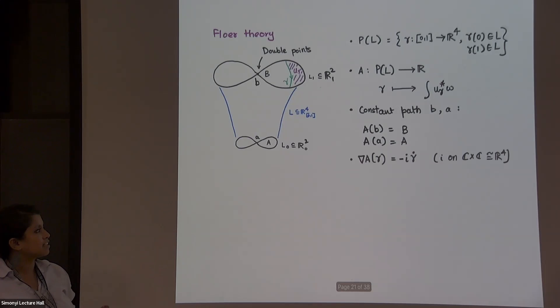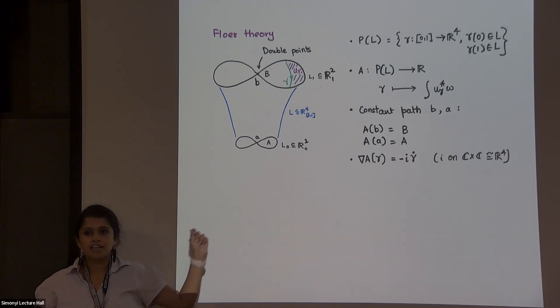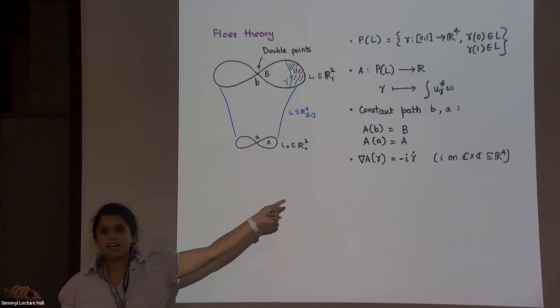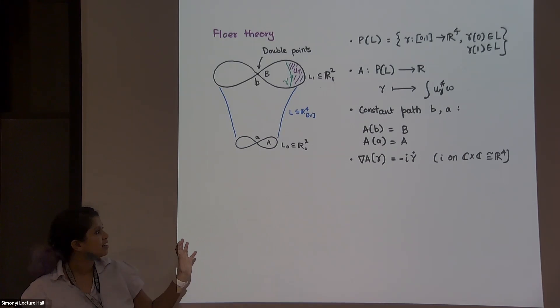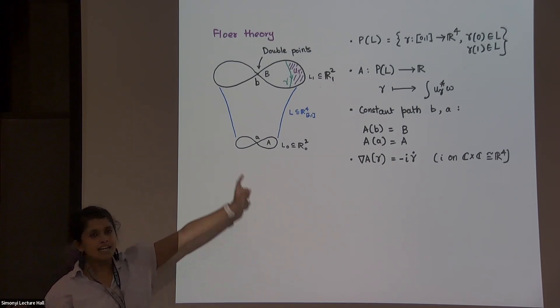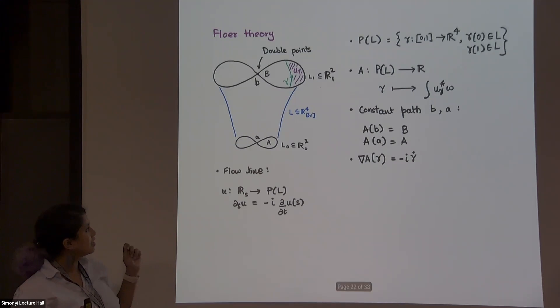And then what else is cool about this function? If you do a gradient, so gradient for this is a vector field along the path. It's going to be that quantity, but i is a complex multiplication for the standard complex form on R4. So that also tells you that the critical points are exactly the constant paths.